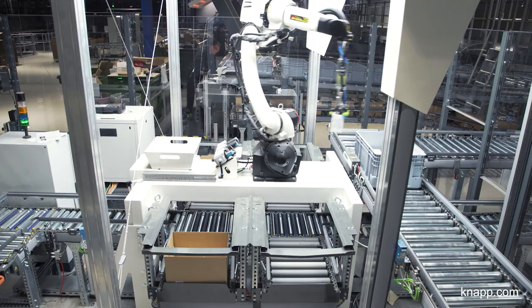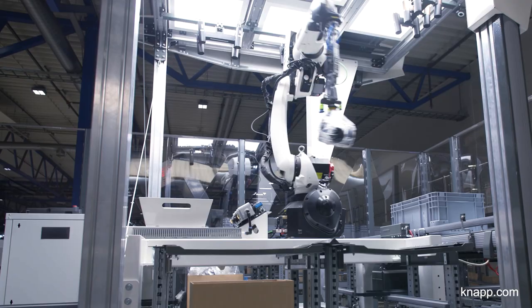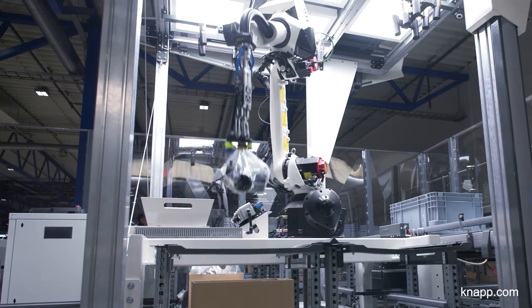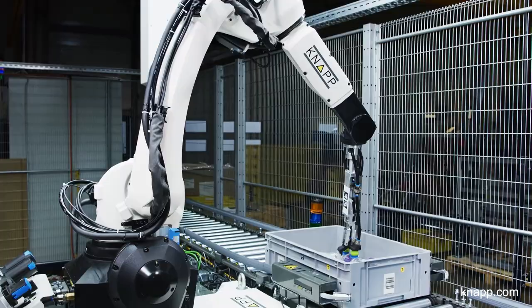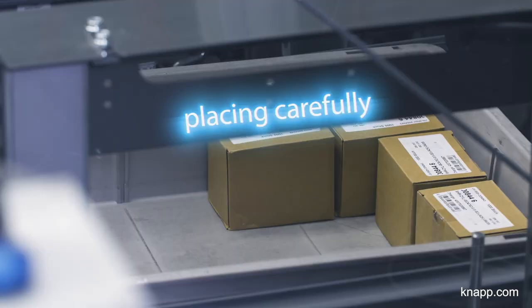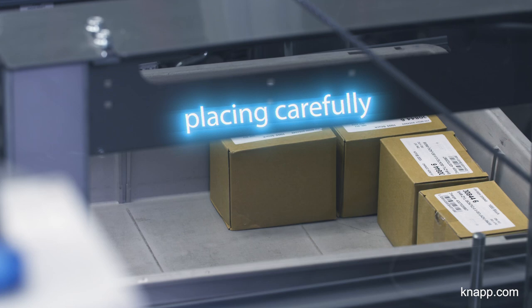Pick it easy robot handles different shapes, sizes, and surfaces, even transparent objects. The robot can drop, carefully place, or merge all kinds of different products.